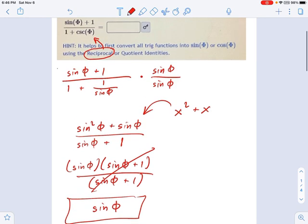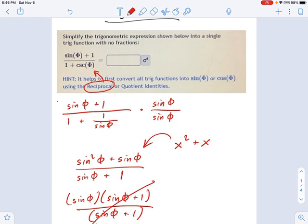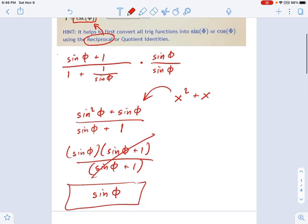So important ideas here. Remember, change anything that's not sine or cosine into those things using the reciprocal or quotient identities, and then just work with your basic algebra skills of factoring. And you can often simplify this down quite a ways.